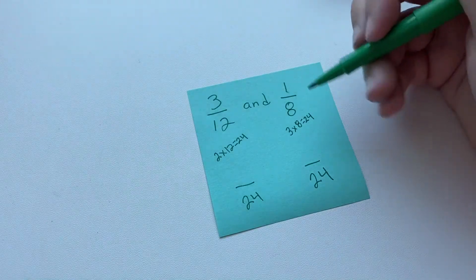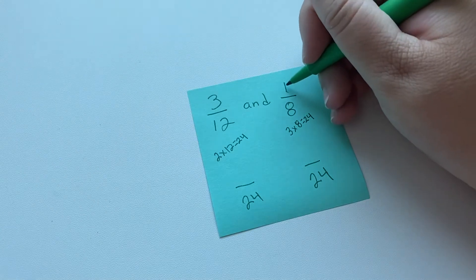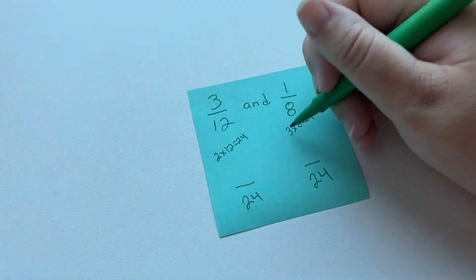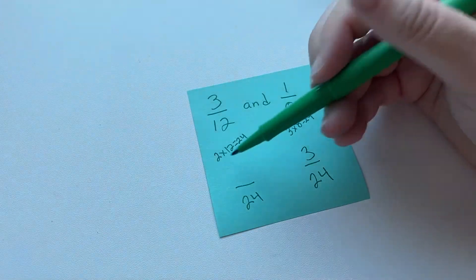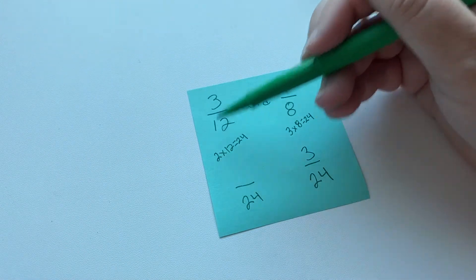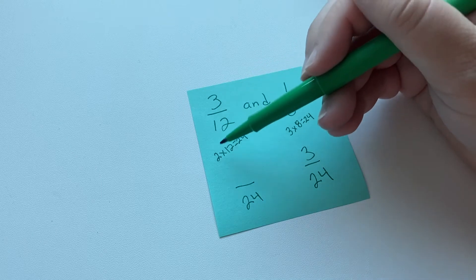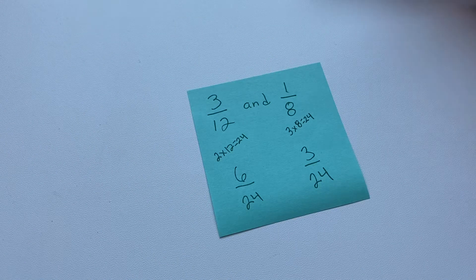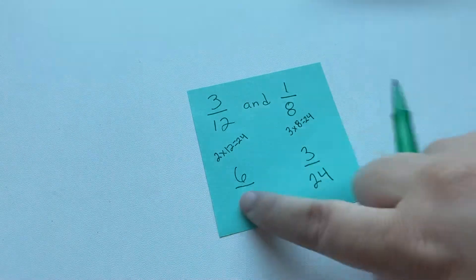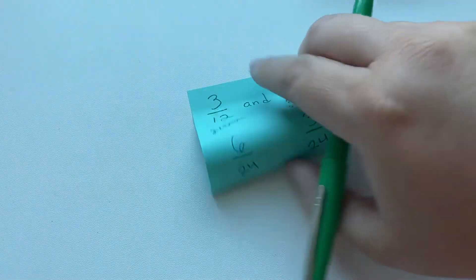Now, how do we get our numerators? Well, since we multiply the 8 by 3, we're going to multiply the 1 by the 3. So 3 times 1 is 3. And since we multiplied the 12 times 2, we're going to multiply the numerator 3 times 2, and we're going to get 6. So it's that simple, except you'll see now they have the common denominators, which is what we're looking for. Now we could add or subtract them.